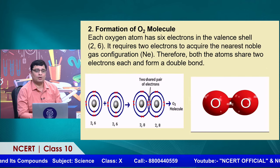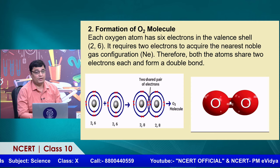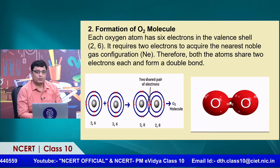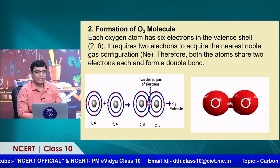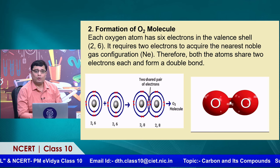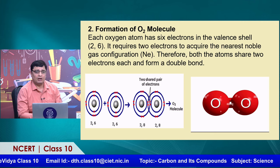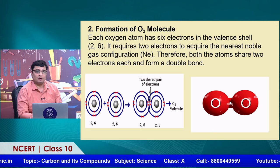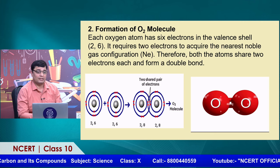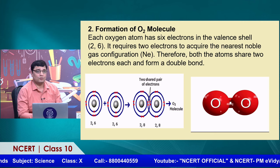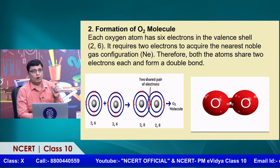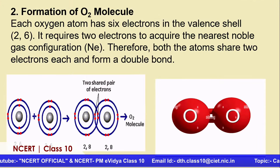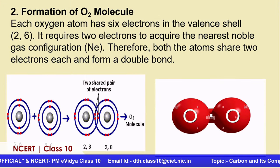We can also explain the formation of the O2 molecule. The atomic number of oxygen is 8, with electronic configuration 2,6. It requires two electrons to acquire the nearest noble gas configuration, neon (Ne). Therefore, both oxygen atoms share two electrons each and form a double bond. The orbitals of both atoms overlap with each other and the oxygen molecule is formed, which has a double bond between the two oxygen atoms.